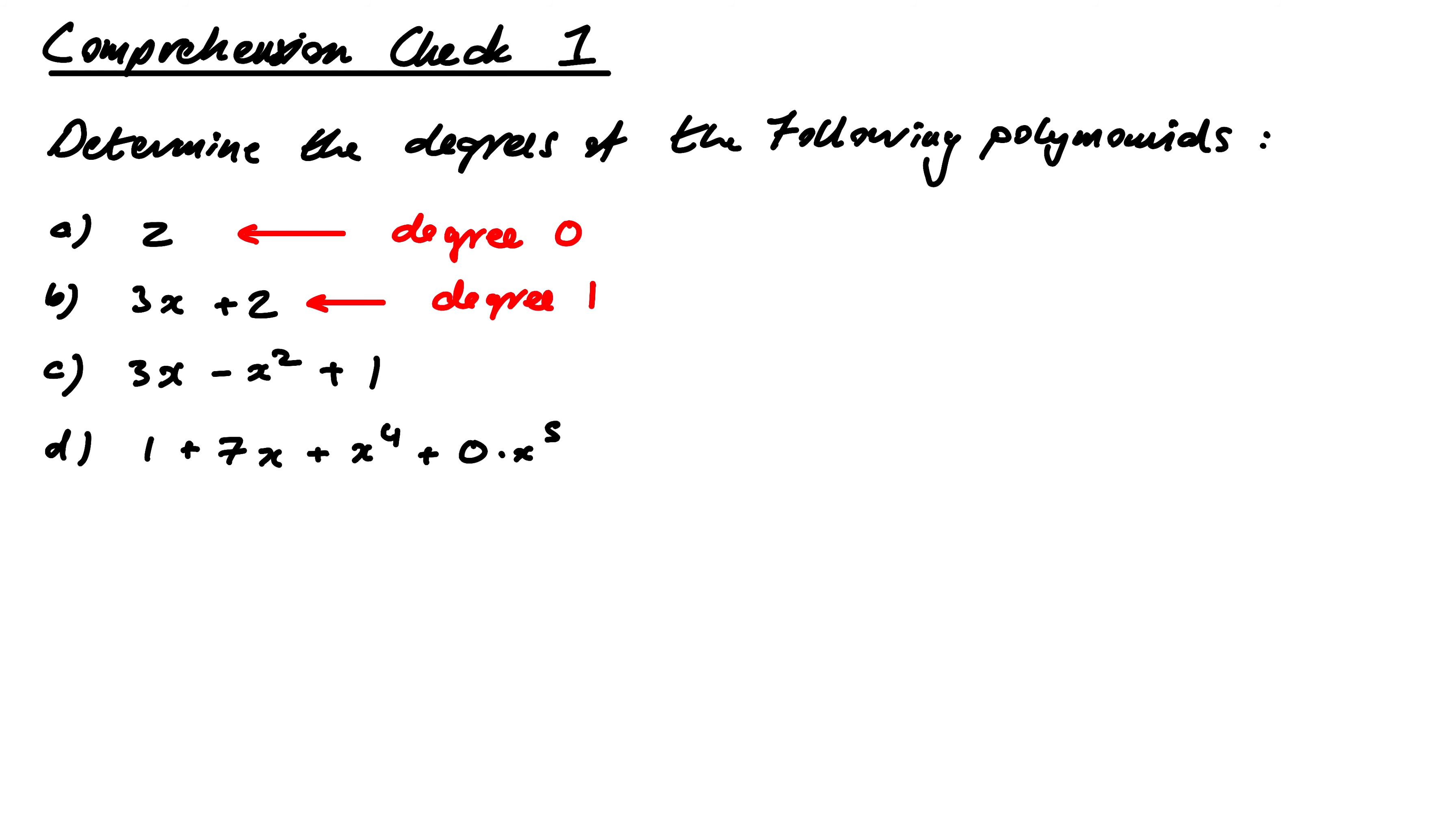Second one, well, it's slightly out of order, but it doesn't make any difference because a plus b is equal to b plus a. We could rearrange this to put it in the standard format. The highest power, clearly, is 2, so this is degree 2. It's called quadratic.